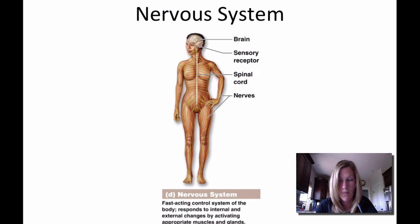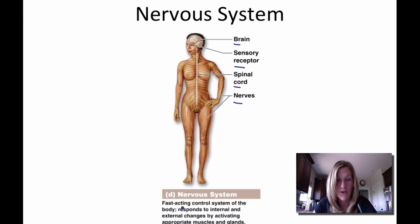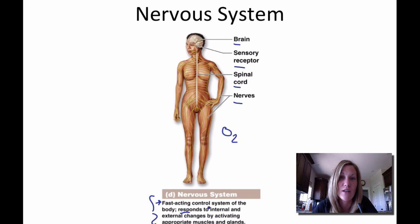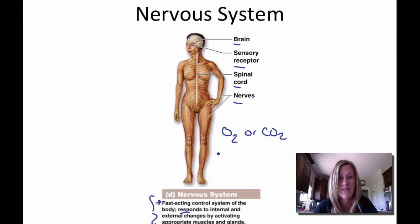The nervous system is made up of the brain, sensory receptors, spinal cord, and nerves. It is a fast-acting control system of the body that responds to internal and external changes by activating appropriate muscles and glands. An internal change might be oxygen or carbon dioxide levels; an external change would be something like light, temperature, or sound. Internal is anything happening inside your body; external is anything happening outside.